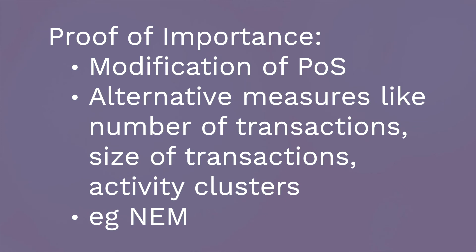Let us consider the example of a blockchain platform called NEM. In NEM, the cryptocurrency is known as XEM. In NEM, a node can have permission to add a block into the chain if it has participated in 10,000 transactions, if it has participated in the last 43,200 blocks (approximately 30 days), and if there are transaction partners with it. Depending on these features, a node is validated and becomes a valid node to join a block into the chain.